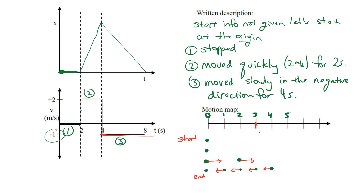For the position-time graph (XT graph), since we decided to start at the origin, that's where we start. Since we're not moving for the first two seconds it's just level, then we move quickly up to four, and then we move back down to zero again — this maximum would be four. I hope you did all right. If not, you can always ask me questions in class. I look forward to seeing you again.